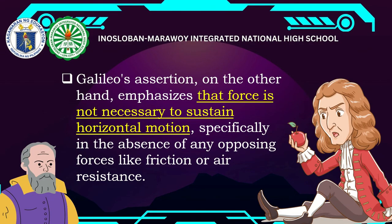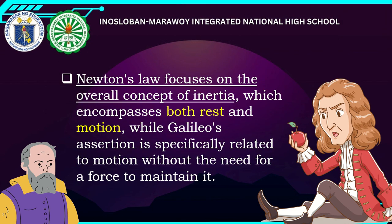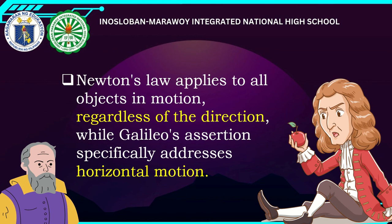Galileo's assertion emphasized that force is not necessary to sustain horizontal motion — as long as friction is absent, an object will move forever, specifically in the absence of opposing forces like friction or air resistance. Newton's law focuses on the overall concept of inertia — a property of a body to resist changes in motion — encompassing both rest and motion, while Galileo's assertion is specifically related to motion without the need for force.